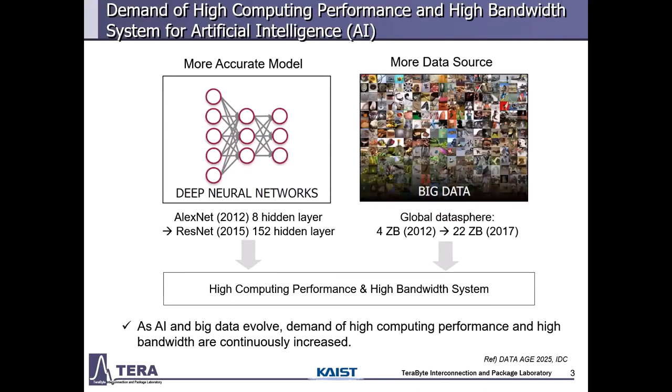As various AI applications develop, AI algorithms and big data are continuously increasing. As shown in the figure, the hidden layers of deep neural networks have increased by 20 times for more accurate models, and the global data sphere is over 20 zettabytes from various data sources. In this trend, demands for high computing performance and high bandwidth systems are strongly required for AI.